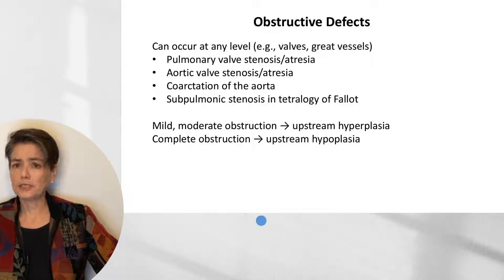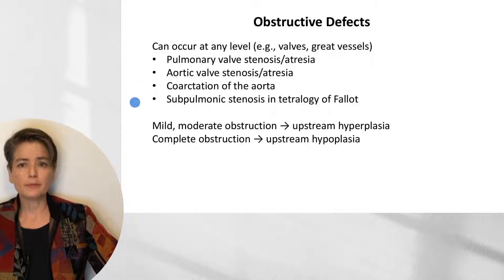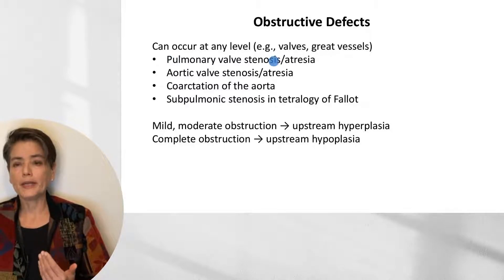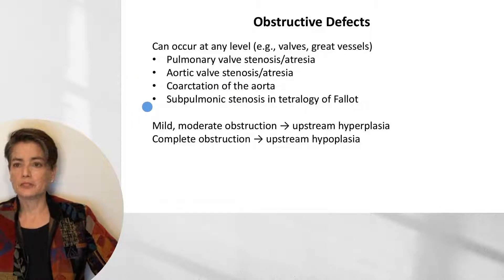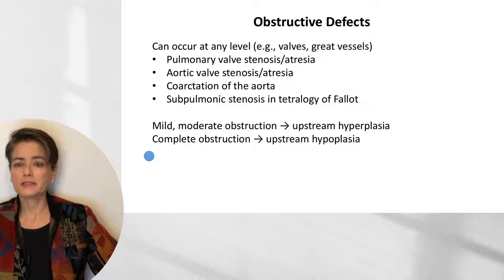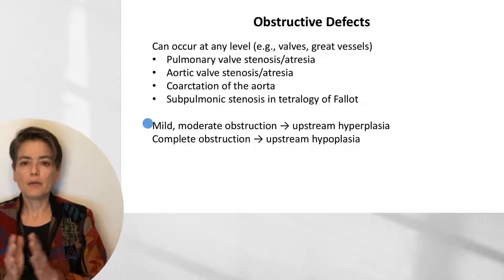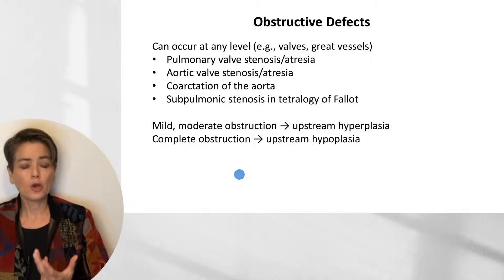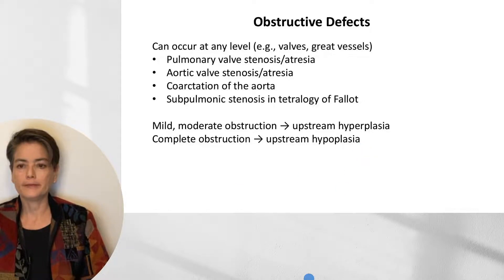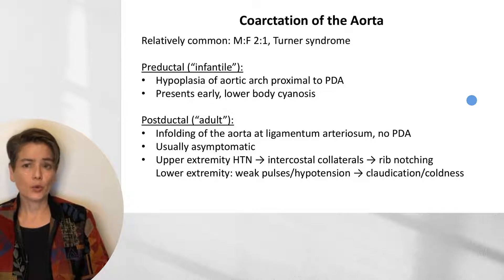This brings us to the obstructive defects, which can occur at any level — at the valves or the great vessels. Common examples include pulmonary valve stenosis, aortic valve stenosis or atresia, coarctation of the aorta, and subpulmonic stenosis in tetralogy of Fallot. To recognize the clinical consequences: with mild to moderate obstruction, the muscles upstream push harder and we get hypertrophy. With complete obstruction, there is no pressure to push against, so we get upstream hypoplasia.